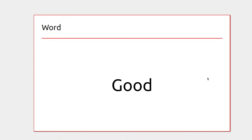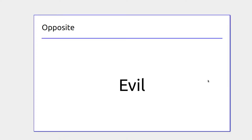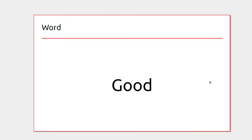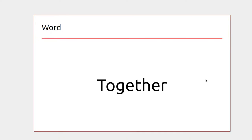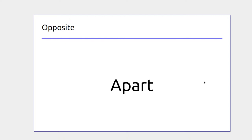Good — my neighbor might check in on me when I'm sick, which is good. Evil is the bad-doers like robbers. Good people are out to do nice things and evil people are out to do very bad things. We might do something together or apart.